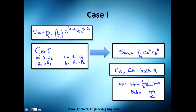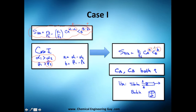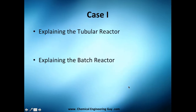Case one is when α1 is greater than α2 and β1 is greater than β2, so both exponents are positive. That means CA and CB must both be high to maximize selectivity. How do you achieve that? You will need a tubular reactor, because concentrations are highest at the inlet, or a batch reactor. Either of these two reactors will work well here.